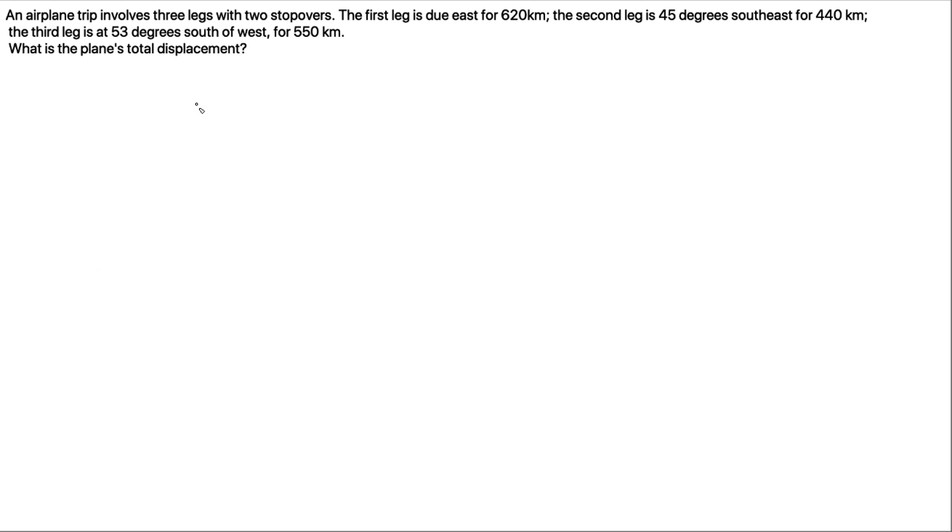An airplane trip involves three legs with two stopovers. The first leg is due east for 620 kilometers, the second leg is 45 degrees southeast for 440 kilometers, and the third leg is at 53 degrees south of west for 550 kilometers. What is the plane's total displacement?